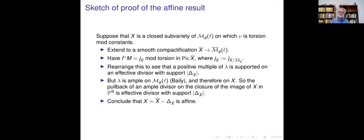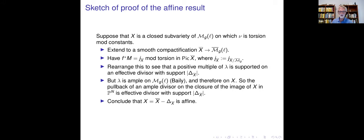Let me sketch the proof of the first theorem. The simple idea is: if the normal function vanishes (or is torsion mod constants), then the ample line bundle—the determinant of the Hodge bundle—is equivalent to an effective sum of boundary divisors, meaning an ample divisor is supported on the boundary. That implies X is affine.